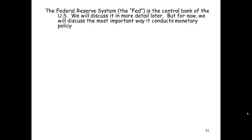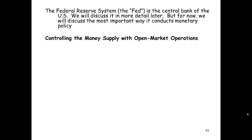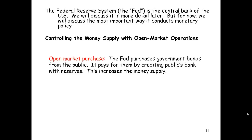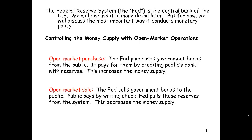The Federal Reserve System, the Fed, is the central bank of the U.S. We'll discuss it in more detail later, but for now we'll discuss the most important way it conducts monetary policy: controlling the money supply with open market operations. An open market purchase occurs when the Fed purchases government bonds from the public, paying by crediting the public's bank with reserves — this increases the money supply. An open market sale occurs when the Fed sells government bonds to the public; the public pays by writing a check, the Fed pulls these reserves from the system, and this decreases the money supply.